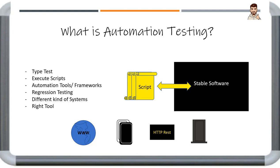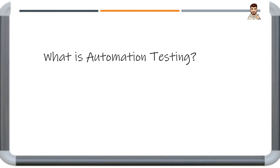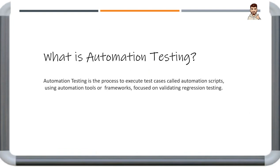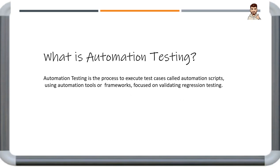Recapitulating: automation testing is the process to execute test cases — called automation scripts — using automation tools or frameworks, focused on validating regression testing.